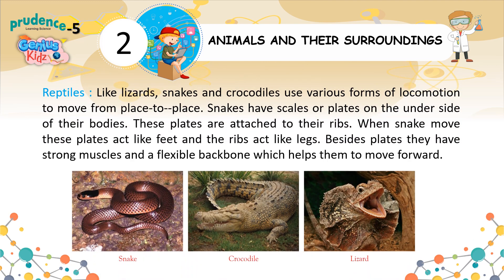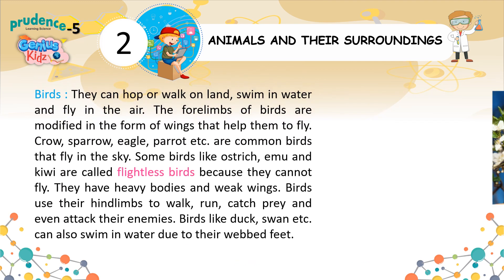Reptiles like lizards, snakes, and crocodiles use various forms of locomotion to move from place to place. Snakes have scales or plates on the underside of their bodies, attached to their ribs. When snakes move, these plates act like feet and the ribs act like legs. Besides plates, they have strong muscles and a flexible backbone which helps them move forward. Birds can hop or walk on land, swim in water, and fly in the air. The forelimbs of birds are modified into wings that help them to fly. Crow, sparrow, eagle, and parrot are common birds that fly in the sky.